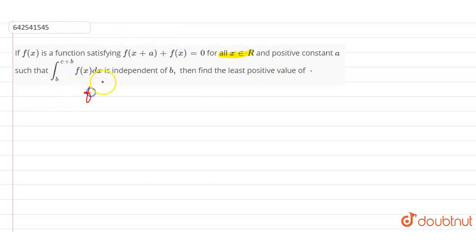Here, f(x+a) + f(x) = 0, that is given. So now, f(x+2a) + f(x+a) = 0.